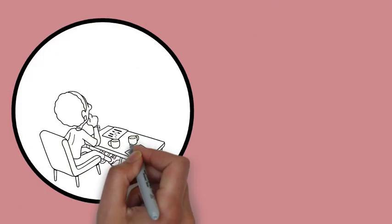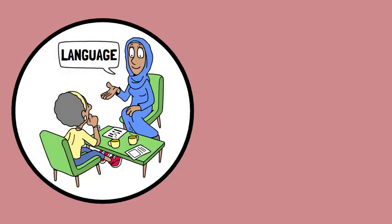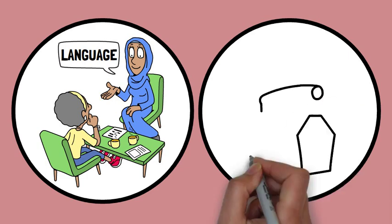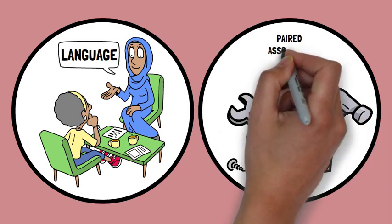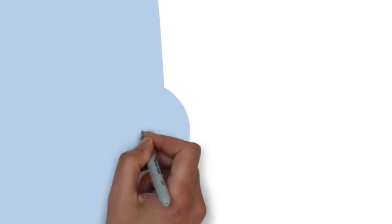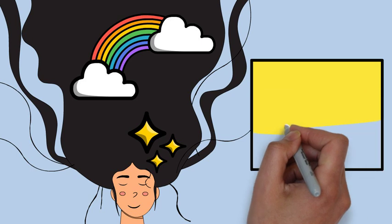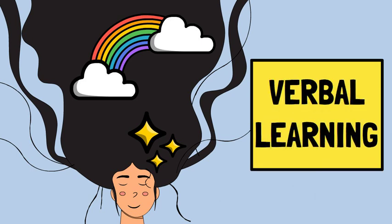Verbal learning is a cognitive process that involves the acquisition and retention of information through language. This intricate process encompasses various techniques including paired associates learning, serial learning, and free recall. Hi guys, welcome to this channel. Let's explore these aspects of verbal learning and address this fascinating cognitive phenomena.